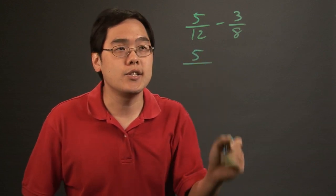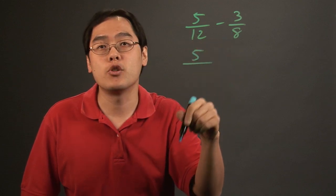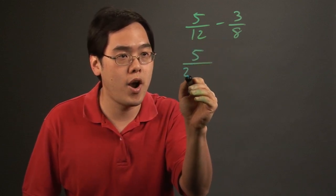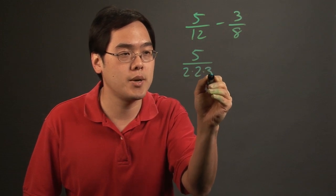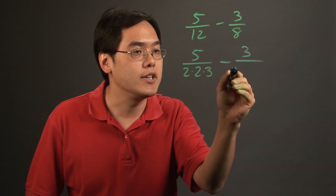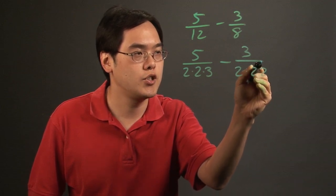The denominator is key, so if you break up 12 and 8 in terms of prime factorization, it's just another way to go. 12 can be broken down as 2 times 2 times 3, minus 3 over 8 is 2 times 2 times 2.